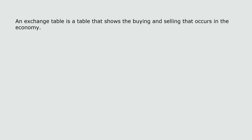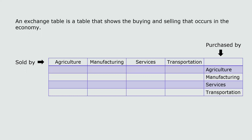An exchange table is a table that shows the buying and selling that occurs in the economy. We're going to set up a table with 'sold by' as the titles of each column — agriculture, manufacturing, services, and transportation — and 'purchased by' as the row entries. So this will be our exchange table, and what we need to do is look at the problem statement to figure out what values go in the table.